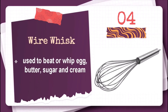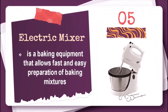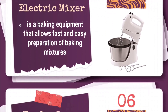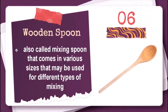Wire whisk is used to beat or whip eggs, butter, sugar, and cream. Electric mixer is a baking equipment that allows fast and easy preparation of baking mixtures. Wooden spoon, also called mixing spoon, comes in various sizes and may be used for different types of mixing.